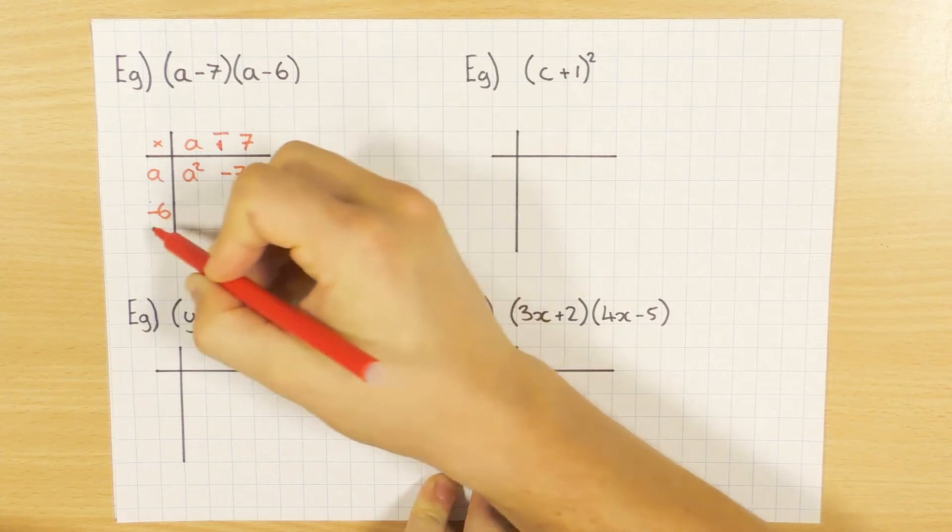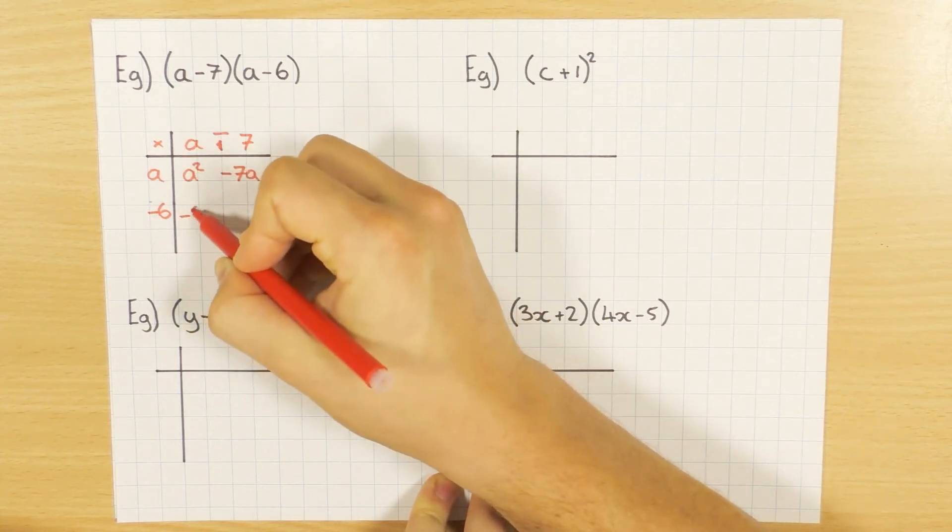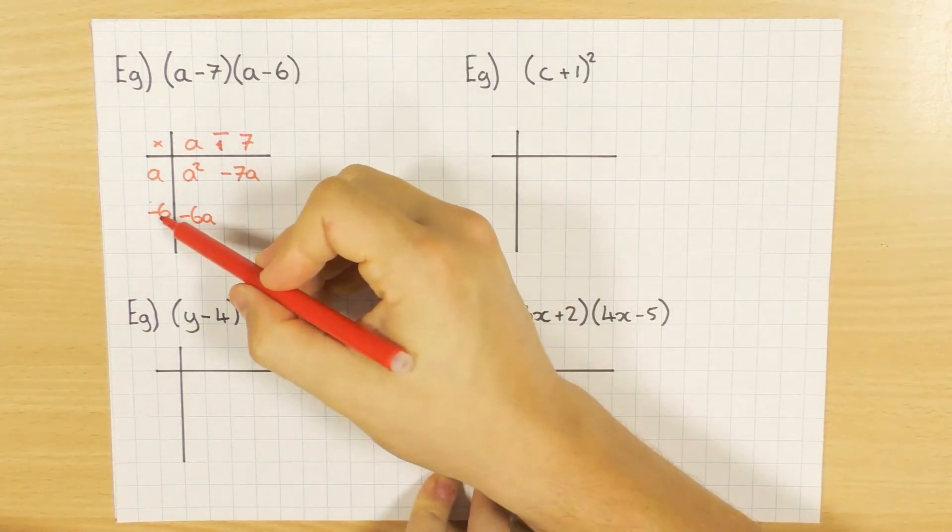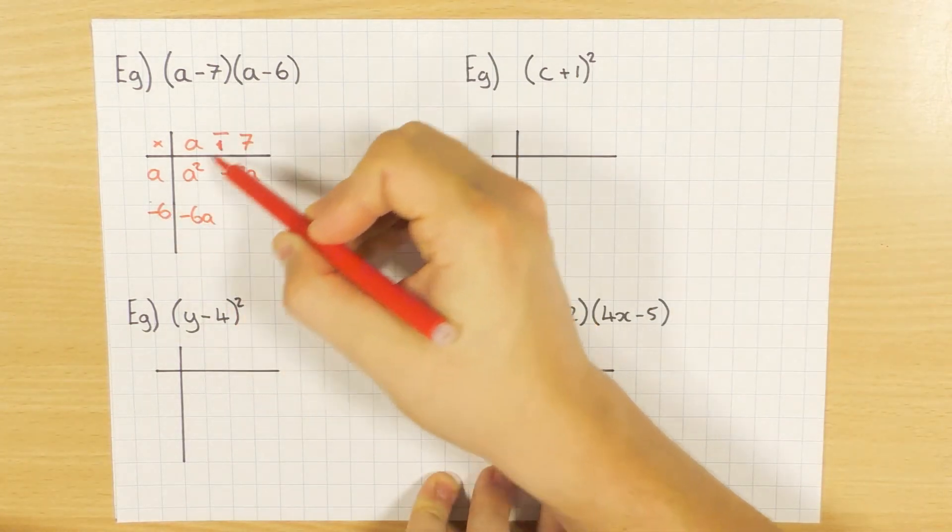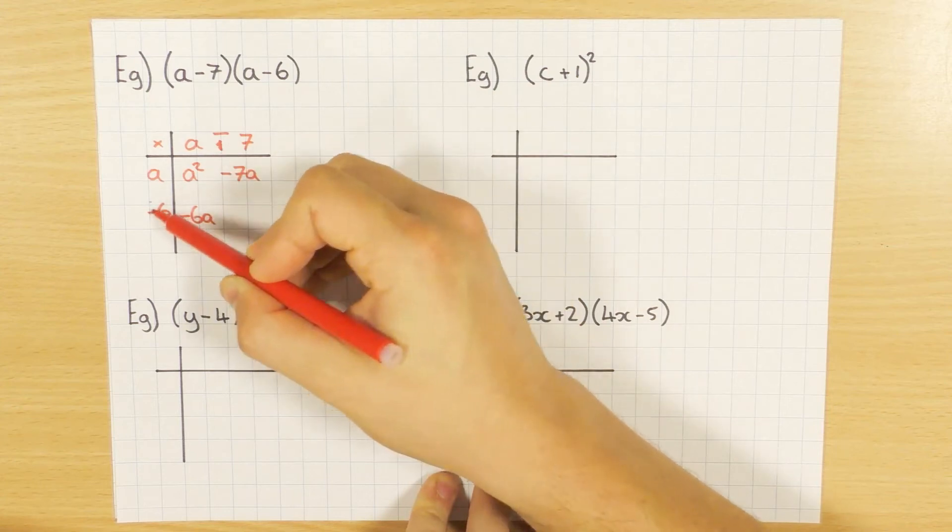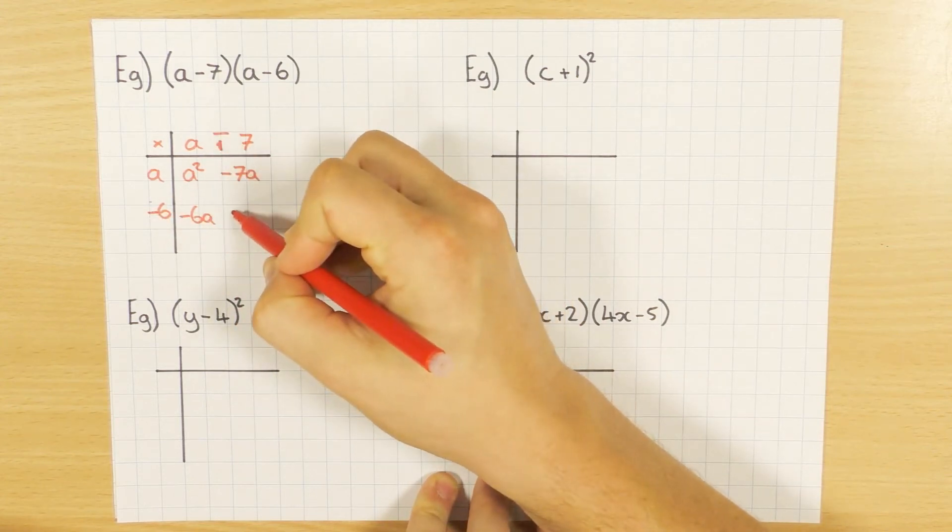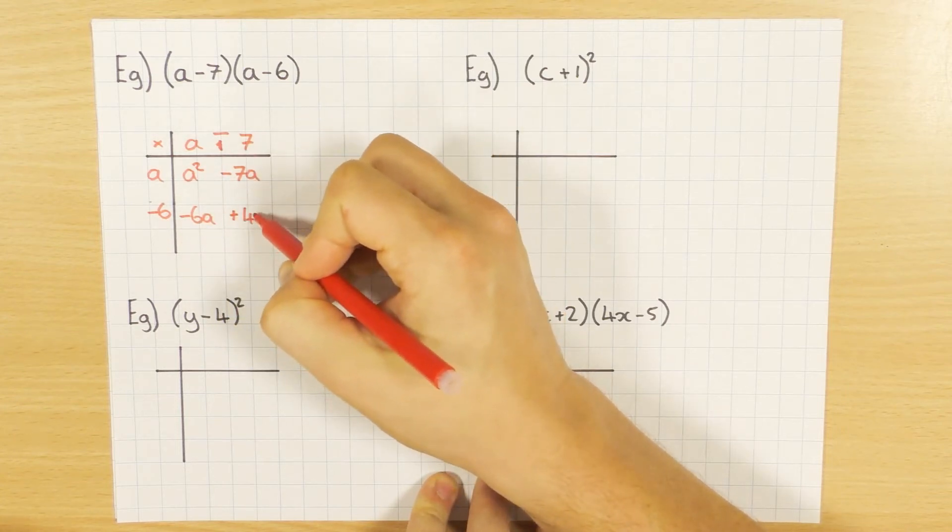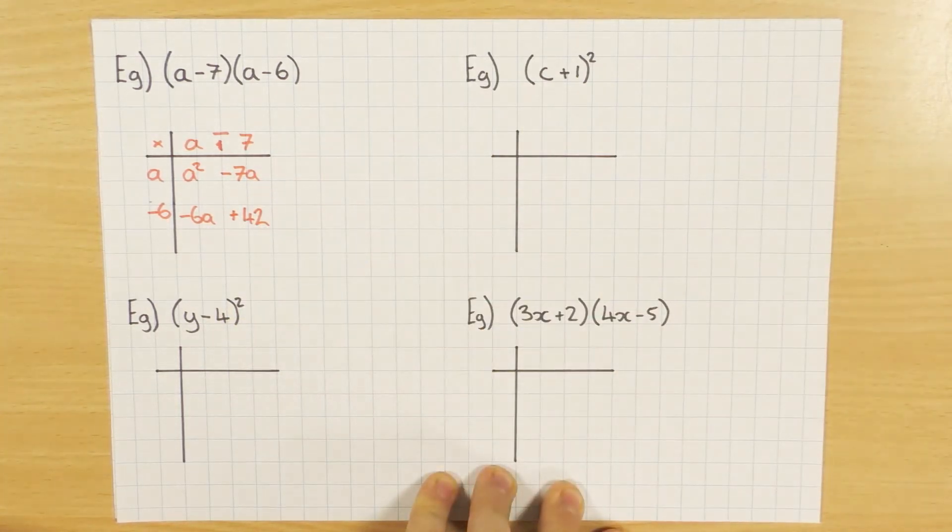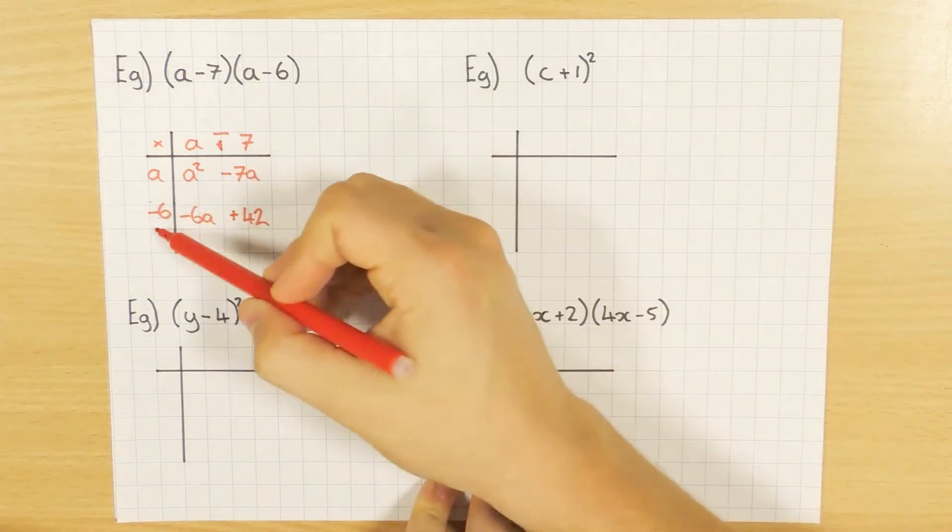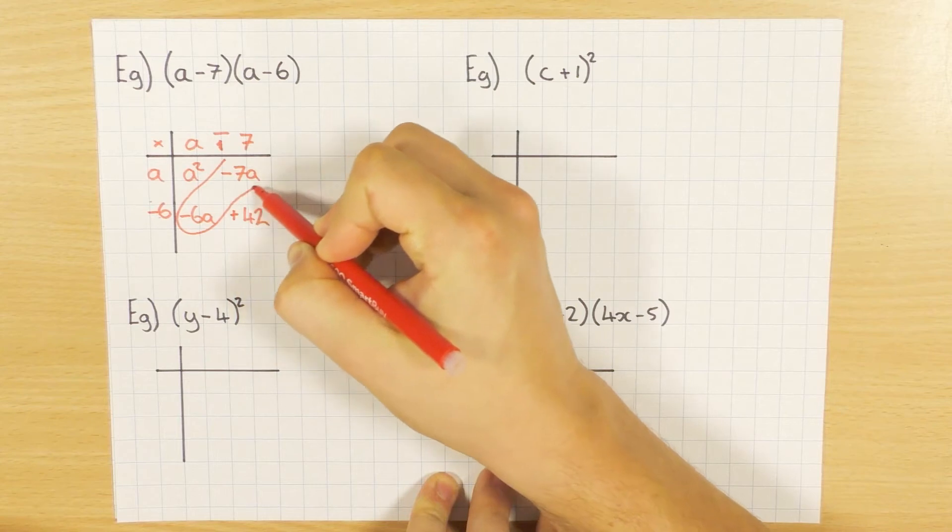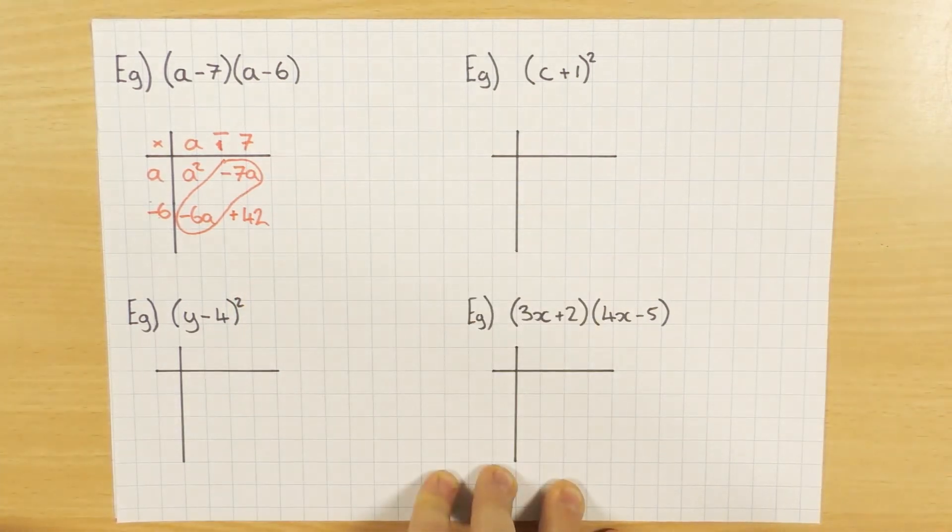Minus 6 times a is minus 6a. And this is the point to be careful of: minus 6 times minus 7. So a minus times a minus, they are the same symbol, they are both minuses, which means your answer will be a positive. And 6 times 7 is 42. Okay, so be very careful with that double negative when you are multiplying.